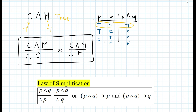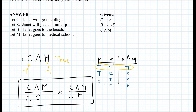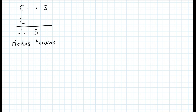So how can we apply the law of simplification to solve the do now? We know that C is true by simplification. Looking at the first given — if C then S — that is a true premise, and we know C by itself is true. We can now combine these using modus ponens, which we learned in the previous video. We have: if C then S, and C is true by the law of simplification, therefore S must be true — Janet is getting a summer job. That is by modus ponens, also called the law of detachment.